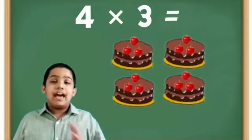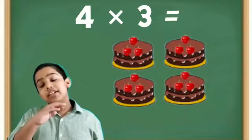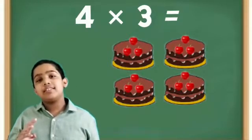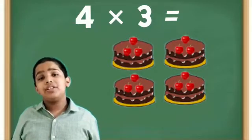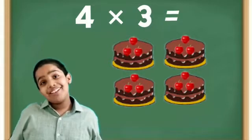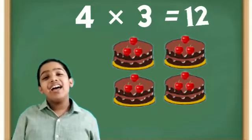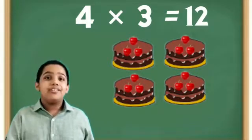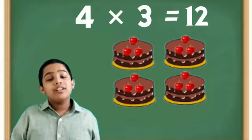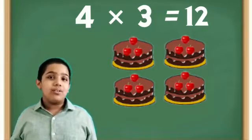So we have 4 cakes and on top of each cake there are 3 cherries. Can you tell me how many cherries are there in all? Yes! There are 12 cherries. Great job. 4 times 3 equals 12.